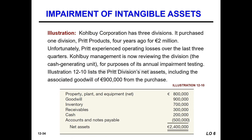Count by Corporation has three divisions. It purchased one division, Preet Products, four years ago for two million dollars. Unfortunately, Preet experienced operating losses over the last three quarters. Management is now reviewing the division as a cash-generating unit for the purpose of its annual impairment test review.